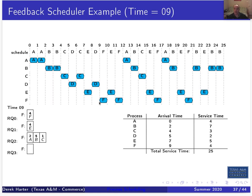At time nine, F gets scheduled for its first time slice quantum. No more arrivals, so we stop checking. At time ten, E is at the front of priority level one so E runs; at eleven, F runs for one. At time twelve through some additional steps, A, B, C, E, and F run in sequence, and C finishes off — it exits the system.